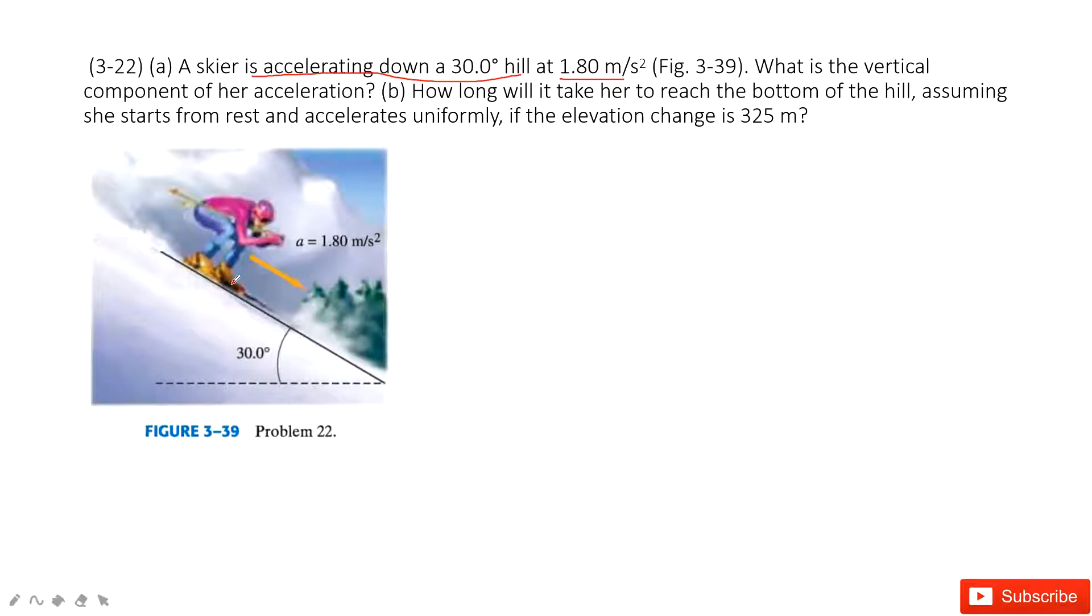We can see the person on the slope. When we solve the problem, we want to find the vertical component. That means we need to project the acceleration into the vertical and horizontal components. We draw the reference point here, and the acceleration is pointing down the slope.